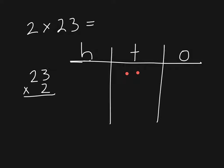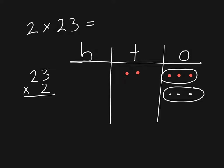So I have two tens and three ones, and I'm multiplying this by 2. Remember, whenever we read a multiplication problem, instead of saying 'times' we can say 'equal groups of.' So in this instance we have two equal groups of 23. To multiply this, I'm going to take my three ones and multiply by two — that gives me six ones. Now I multiply my two tens by two, which gives me a total of four tens.